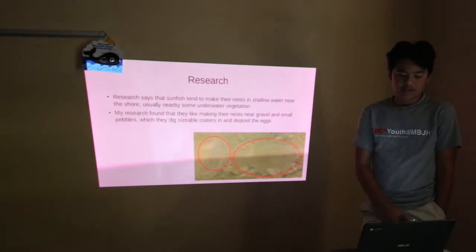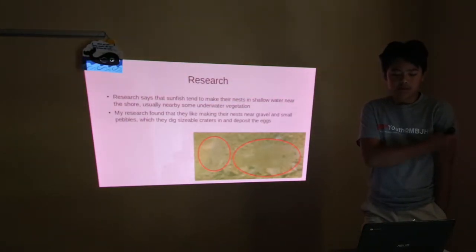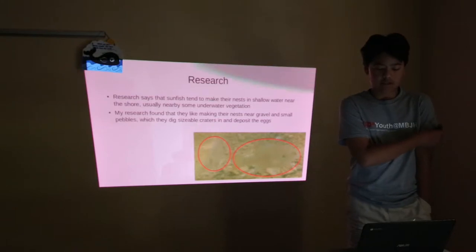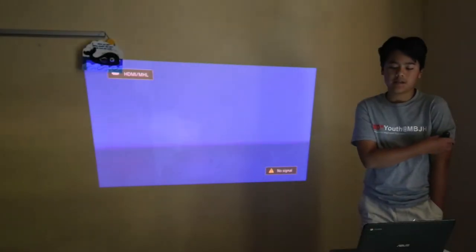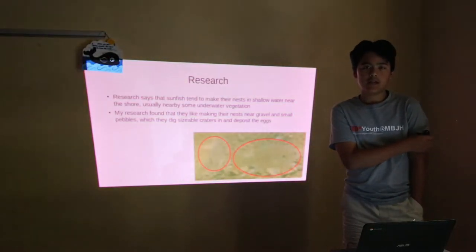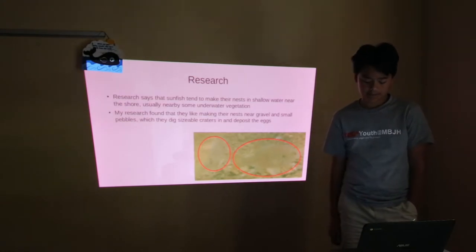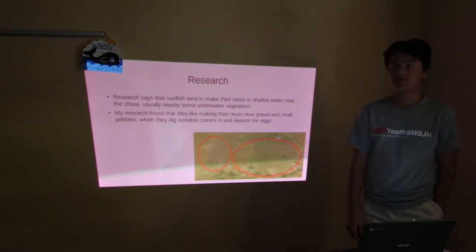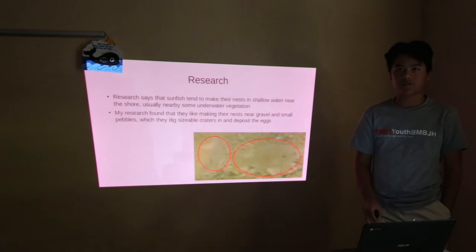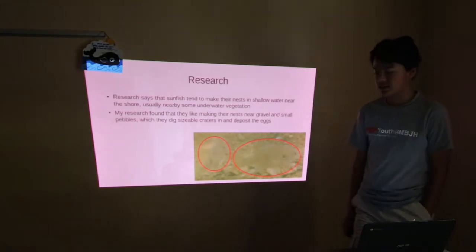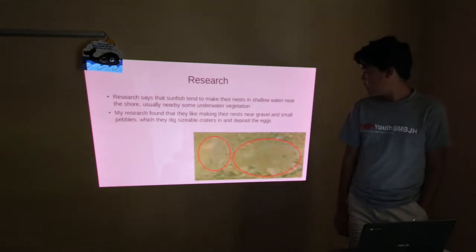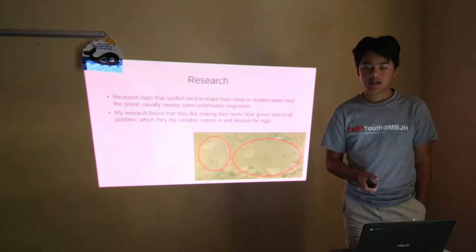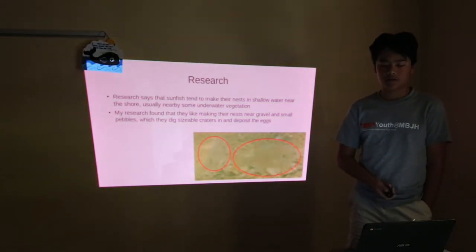My research says that sunfish tend to make nests in shallow water near the shore, usually nearby some underwater vegetation. My research also found that they like making nests near gravel and small pebbles in which they deposit their eggs. Here I have a picture of two baby sunfish. I circled them because they are very hard to see against the gravel and pebbly background. But I chose this photo so you can see some small sunfish as well as the kind of environment they were in.